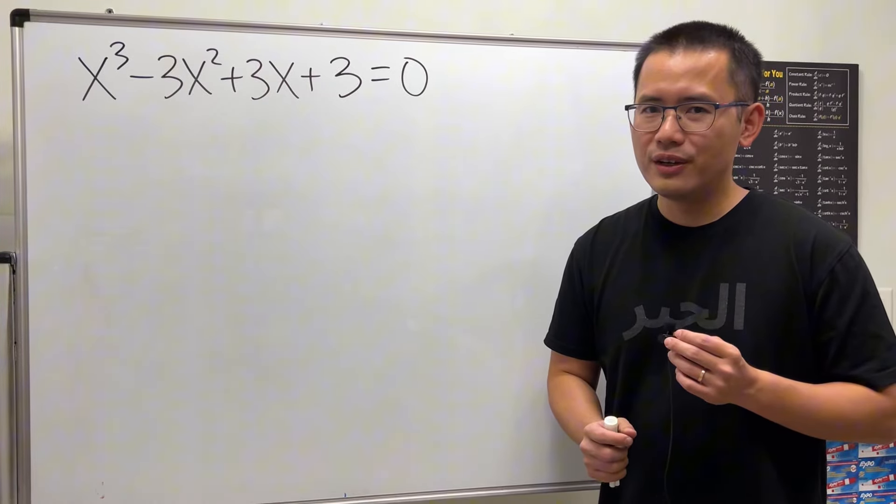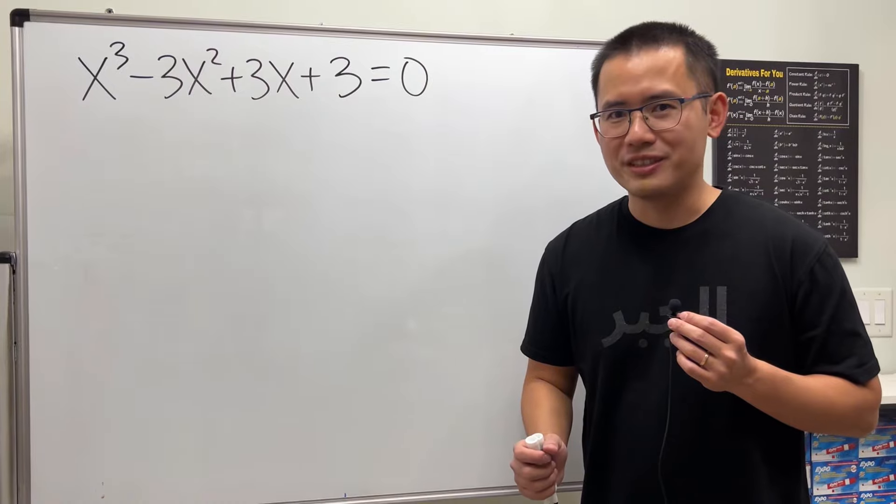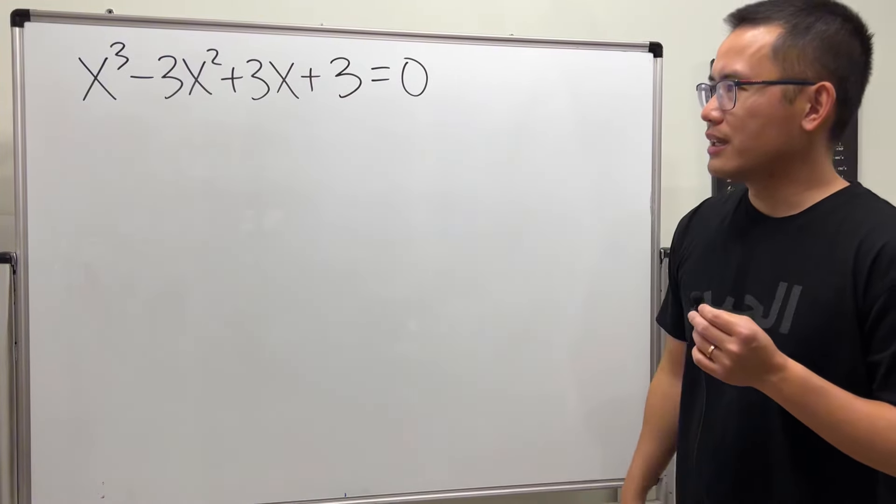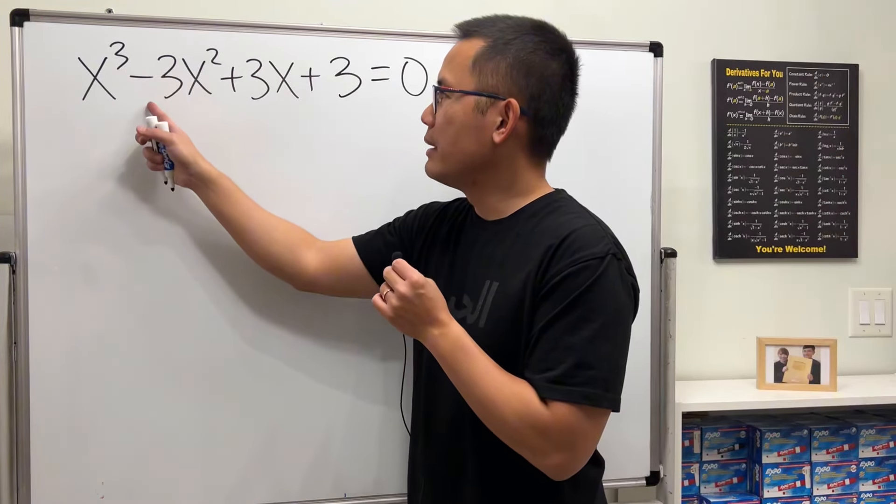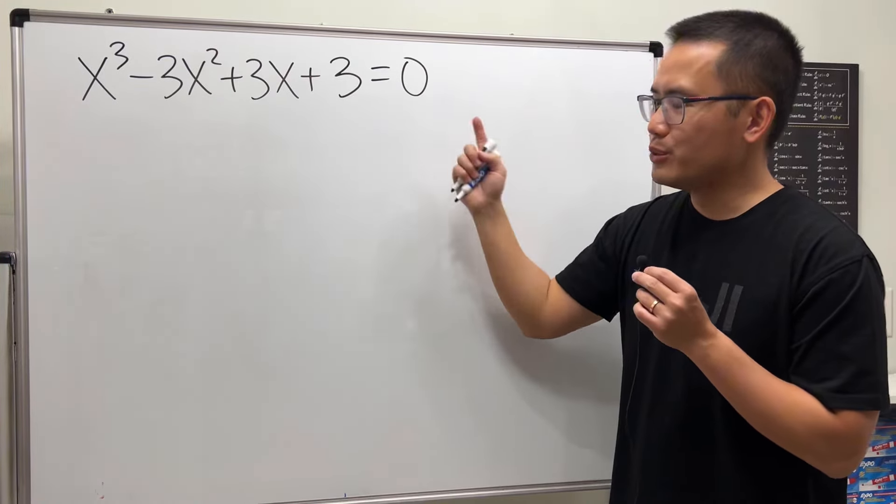Hopefully you have seen my previous video on how to solve a perfect cube equation including the complex solutions. Today let's take a look at this one: we have x³ - 3x² + 3x + 3 = 0.